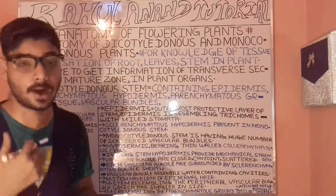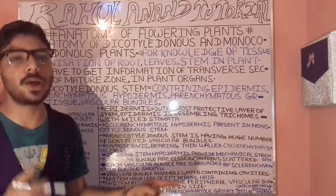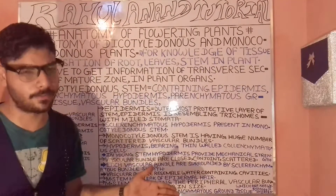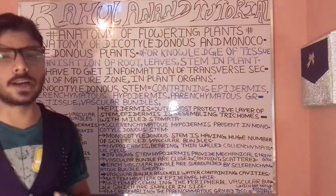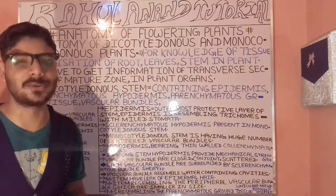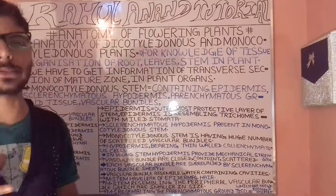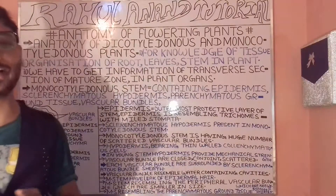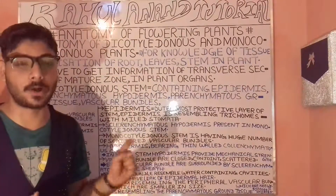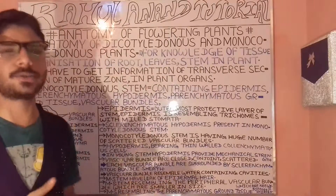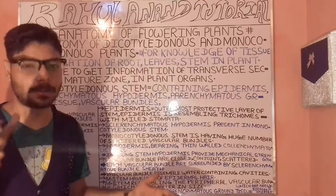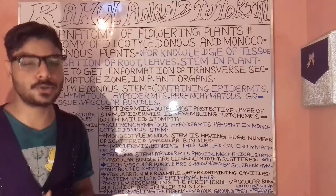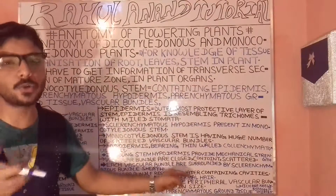In the monocot stem, the peripheral ground tissue is not well differentiated. This means the peripheral ground tissue is not well differentiated in terms of the endodermis, cortical layer, and pericycle. Cortex and pericycle are distinct structures in this context.